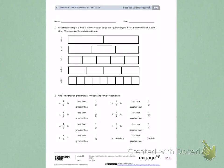This is Module 5, Lesson 10 Homework, Side 1. Today's objective was to compare unit fractions by reasoning about their size using fraction strips.